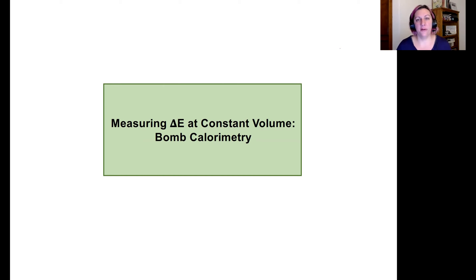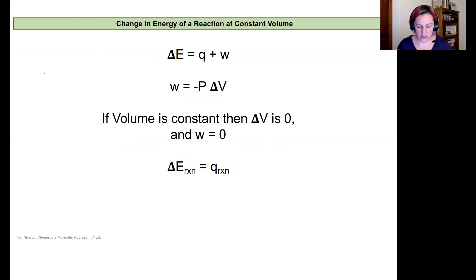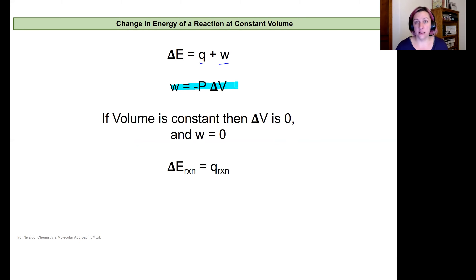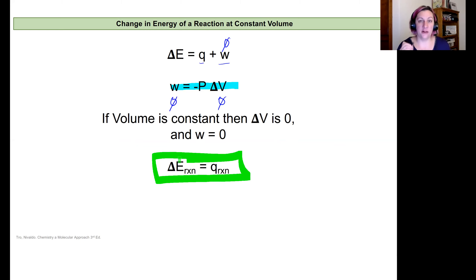In this video we're going to talk about how to measure internal energy using a bomb calorimeter, which we keep at constant volume. If internal energy equals heat plus work, and work involves the change in volume at a pressure, then keeping volume constant means the change in volume is zero, work is zero, and the change in internal energy equals the heat transferred.